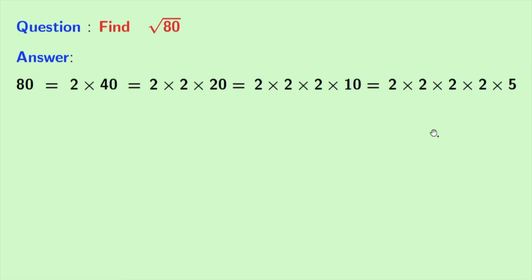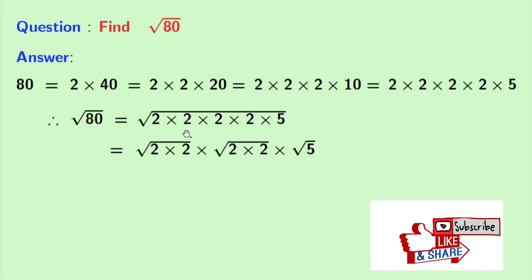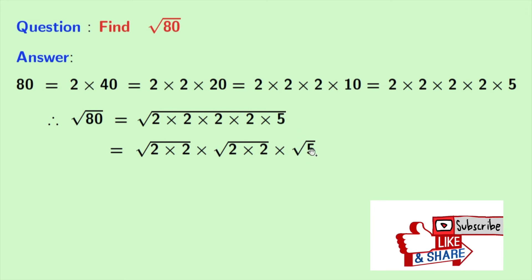Now we will take the square root on both sides, and doing that we get root 80 is equal to the square root of 2 times 2 times 2 times 2 times 5. Now we will rewrite it as the square root of 2 times 2, times the square root of 2 times 2, times root 5. Here we have used grouping.